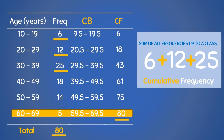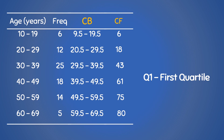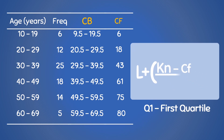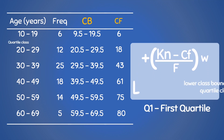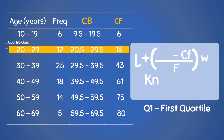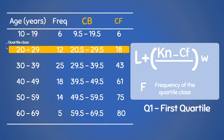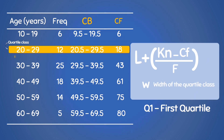With this table in place, we can now find the quartiles. Let's start with the first quartile, Q1. Q1 for grouped data is given by the formula: L plus KN minus CF, all over F, multiplied by W. Where L is the lower class boundary of the quartile class, KN is the quartile position, CF is the cumulative frequency of the preceding class, F is the frequency of the quartile class, and W is the width of the quartile class.